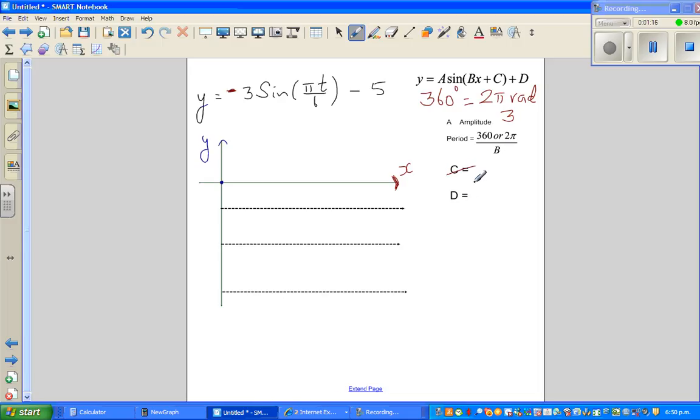This number d tells me the baseline. D is negative 5, so this implies your baseline is negative 5.